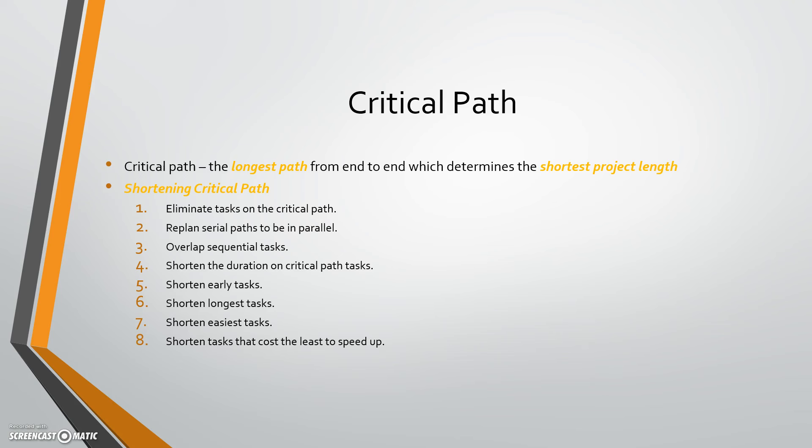There are things you can do to shorten the critical path. You can eliminate tasks — maybe some things were not actually necessary but would have been nice to have. You can make some things that were sequential non-sequential, or overlap sequential tasks — two strands of sequential paths done at the same time. You can also shorten the duration of tasks: shorten early tasks, the longest tasks, or the easiest tasks. And you can add cost, which means getting additional resources to speed things up.